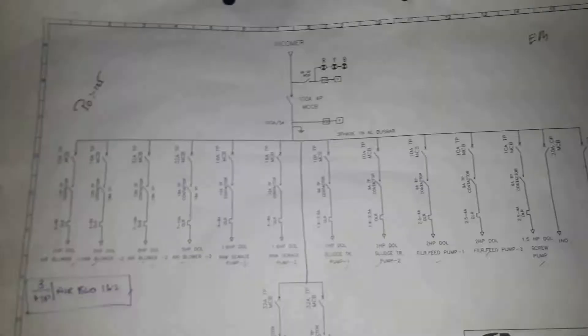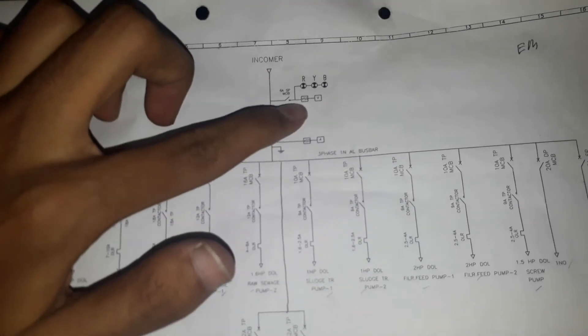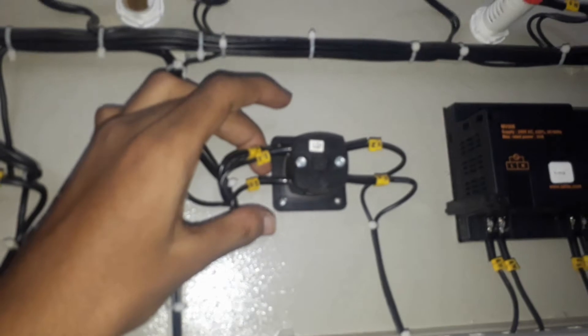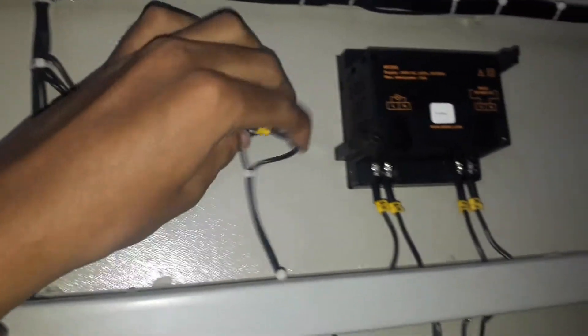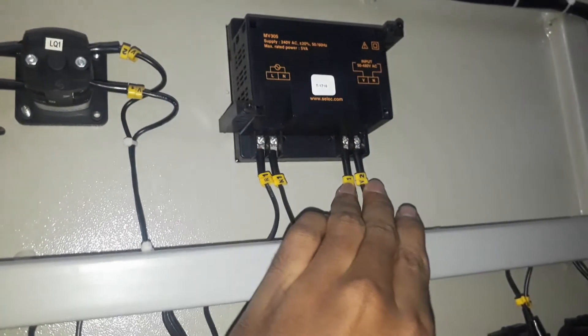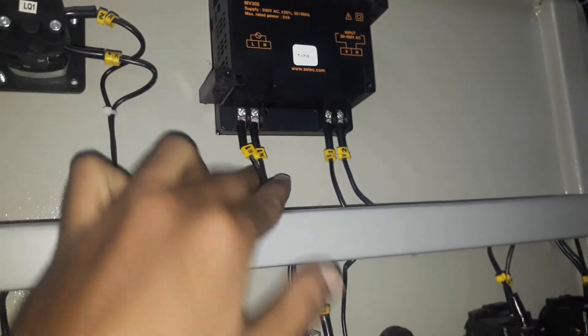This one is the main MCCB. Here you can see the SLD of this panel. From the incomer we are connecting a voltmeter selector switch and a voltmeter. The three phases R, Y, B are connected to the voltmeter, and the two outputs from the voltmeter selector switch — K1, K2 or V1, V2 — are connected as input to the voltmeter. Auxiliary supply R and neutral are also connected to this voltmeter.